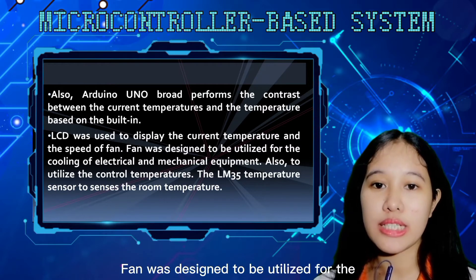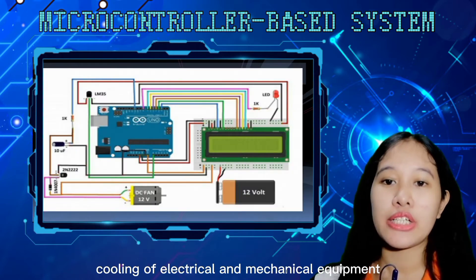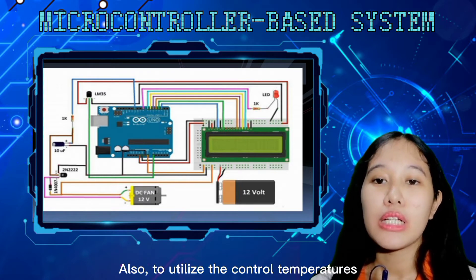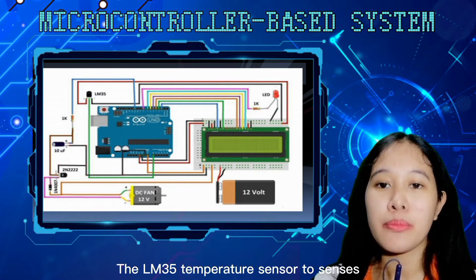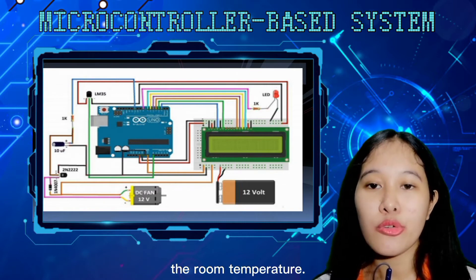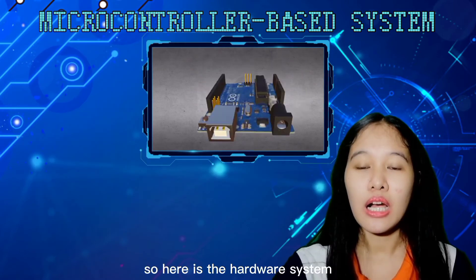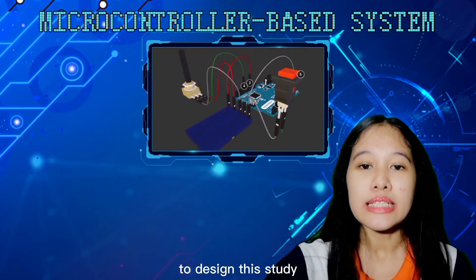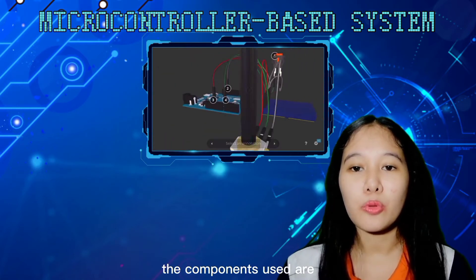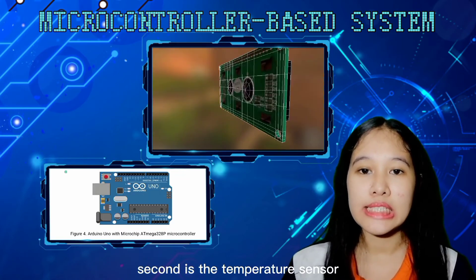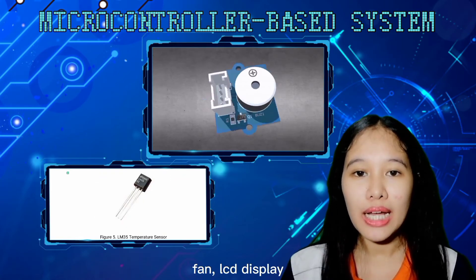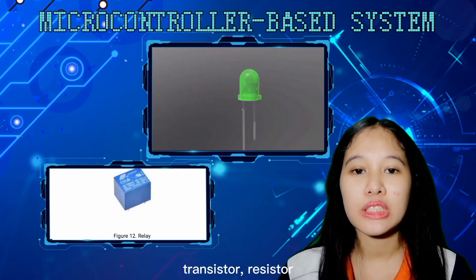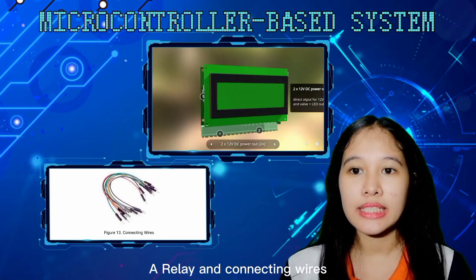The fan was designed to utilize cooling, electrical, and mechanical equipment, and also to control the temperature. The LM35 temperature sensor senses the room temperature. Here is the hardware system designed for this study. The components used are: Arduino Uno, temperature sensor, fan, LCD display, potentiometer, transistor, resistor, and relay with connecting wires.